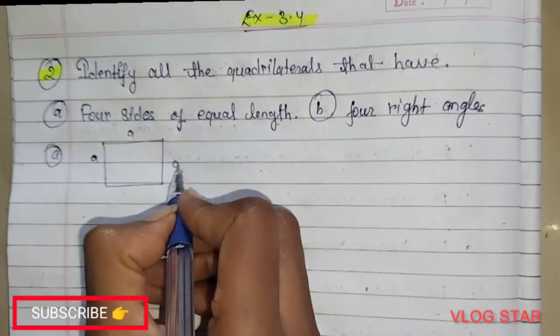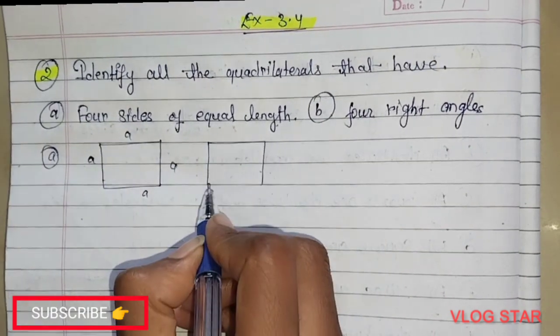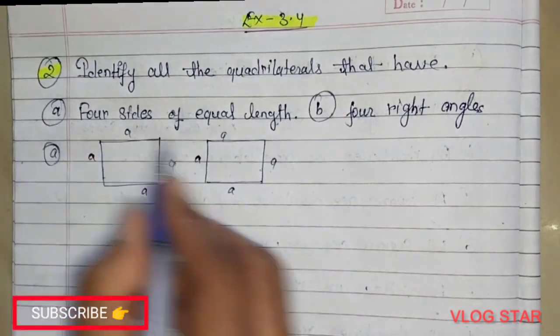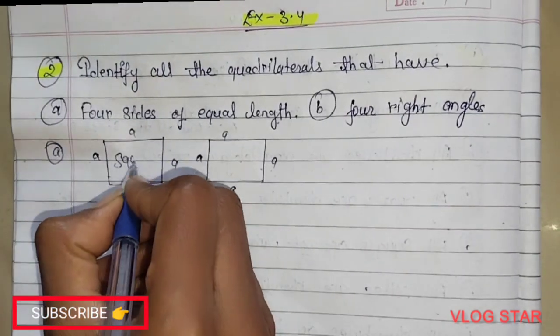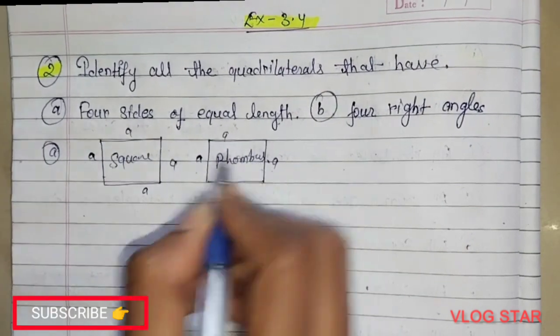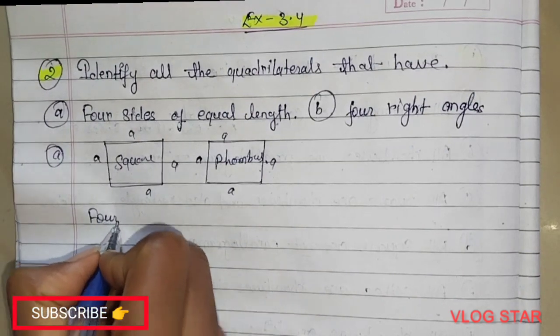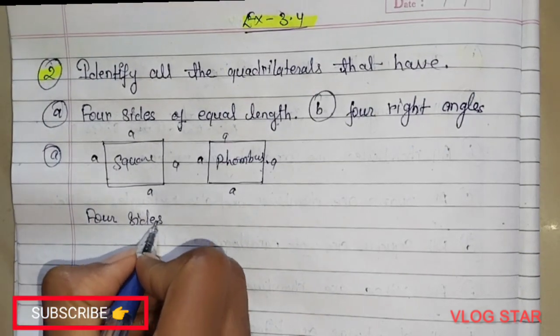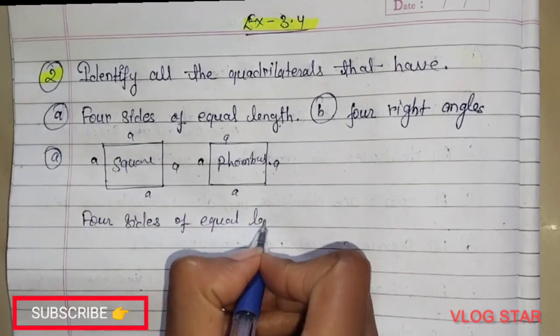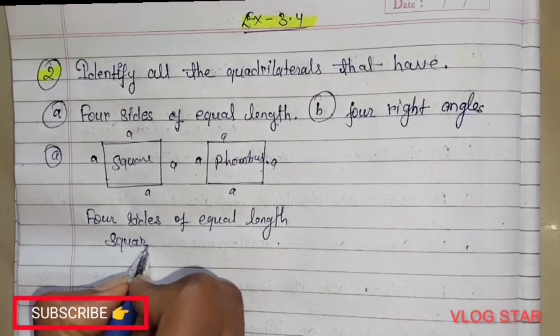the sides are equal. And as we know, in a rhombus all sides are also equal. So this question's answer will be square and rhombus. Four sides of equal length: square and...